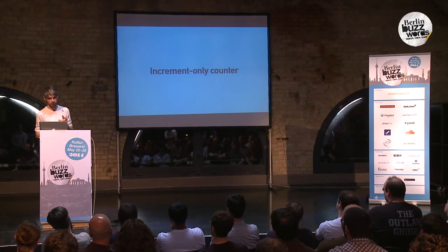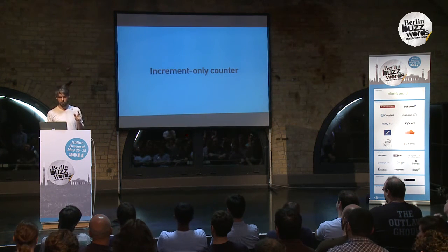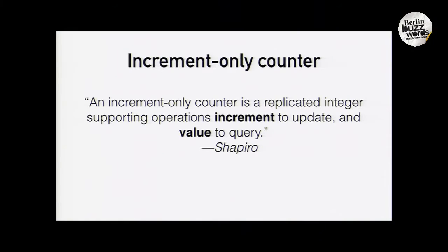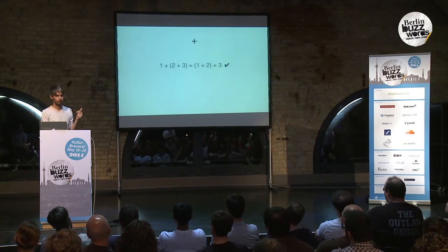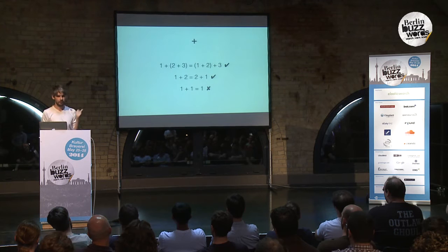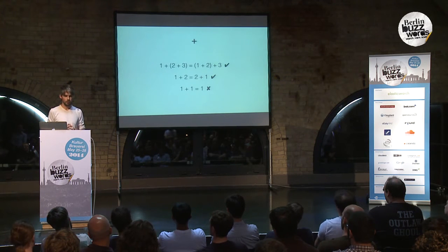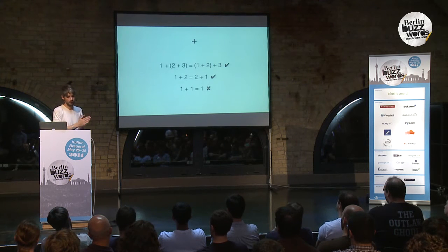The easiest example is an increment-only counter — a replicated integer supporting increment to update and value to query. Read is easy: you just read the value. But let's think about the write operation — plus one. What are the properties of integer addition? It is associative and commutative, but it's not idempotent — adding the same value twice gives a different result. So addition by itself isn't ACID 2.0 / CALM-compliant, and you have to play a bit of a game to get an increment-only counter into CRDT semantics.